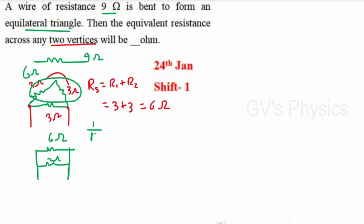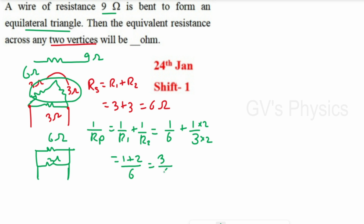For the parallel combination: 1/Rp = 1/6 + 1/3 = 1/6 + 2/6 = 3/6 = 1/2. Taking the reciprocal, Rp = 2 ohm. So the equivalent resistance is 2 ohm.